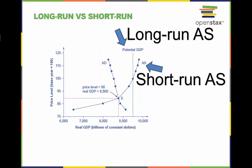Potential GDP, or full employment, is the limit placed on an economy based on its resources, human capital, physical capital, and technology. An economy cannot sustain production levels beyond this point in the long run. However, for short periods of time in the short run, an economy can place unsustainable loads on its labor and capital to produce beyond this point. For this purpose, we will label the vertical line at potential GDP as long-run aggregate supply and the upward curve as short-run aggregate supply.